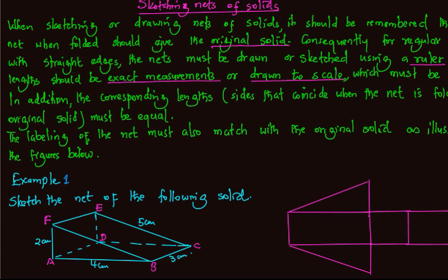We need to label the net of this solid to coincide with the labelling of the original solid. We have point A at the base of the solid, point B also at the base, point C at the base, and point D at the base.